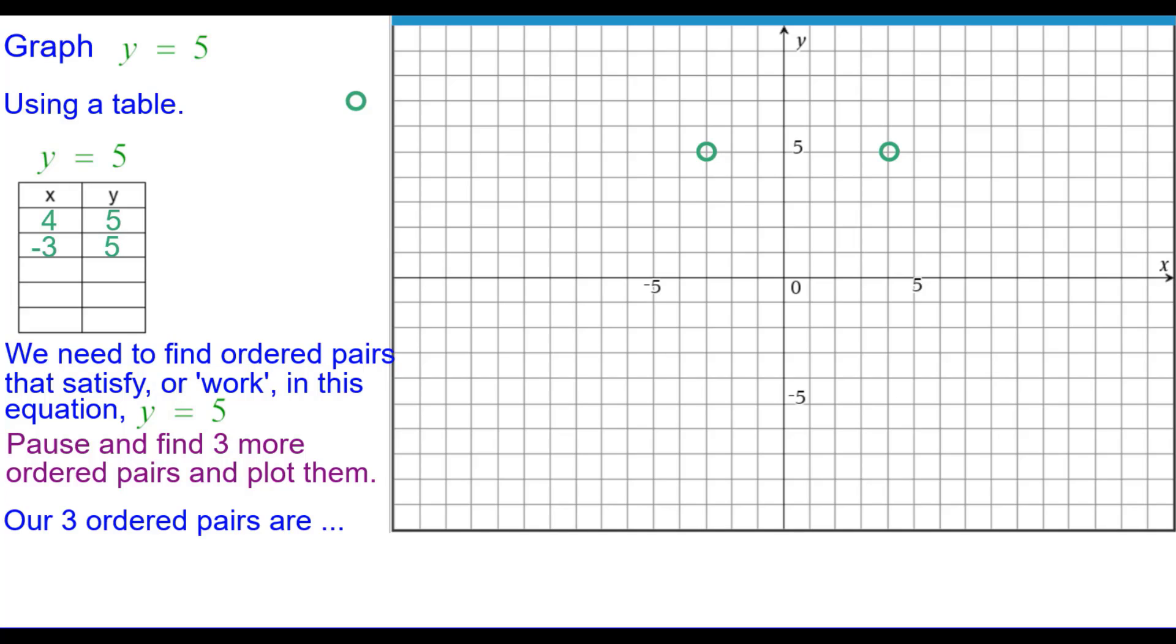Our three ordered pairs are 8, 5, 0, 5, negative 6.1 comma 5 and we use the negative 6.1 to show that you don't always have to have integers.